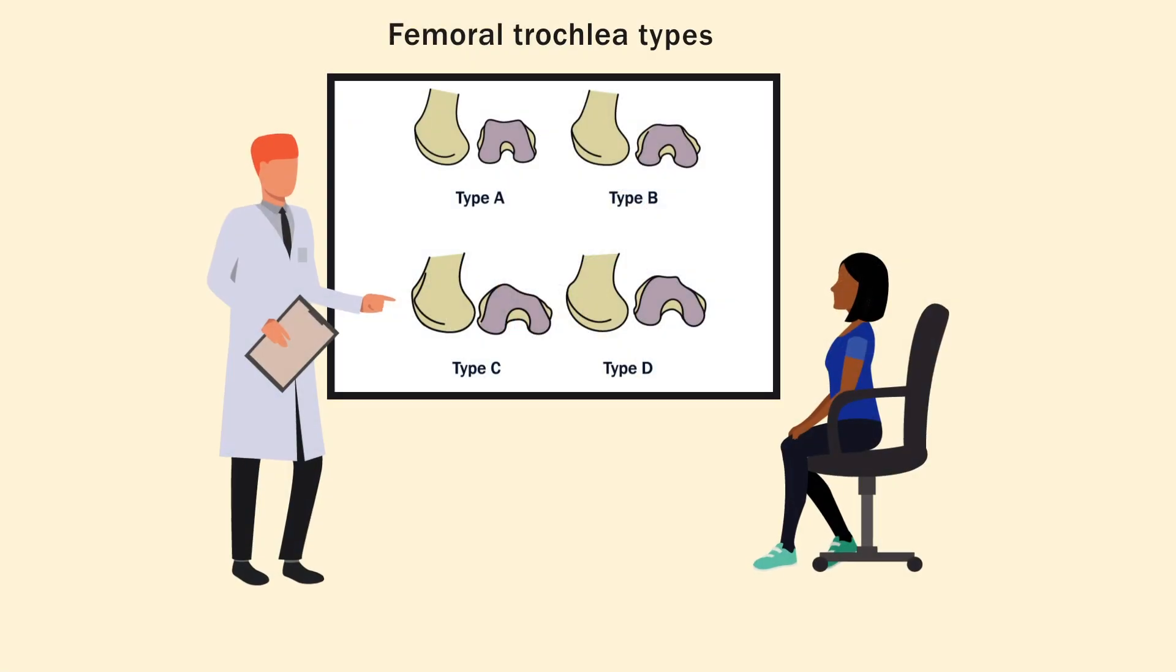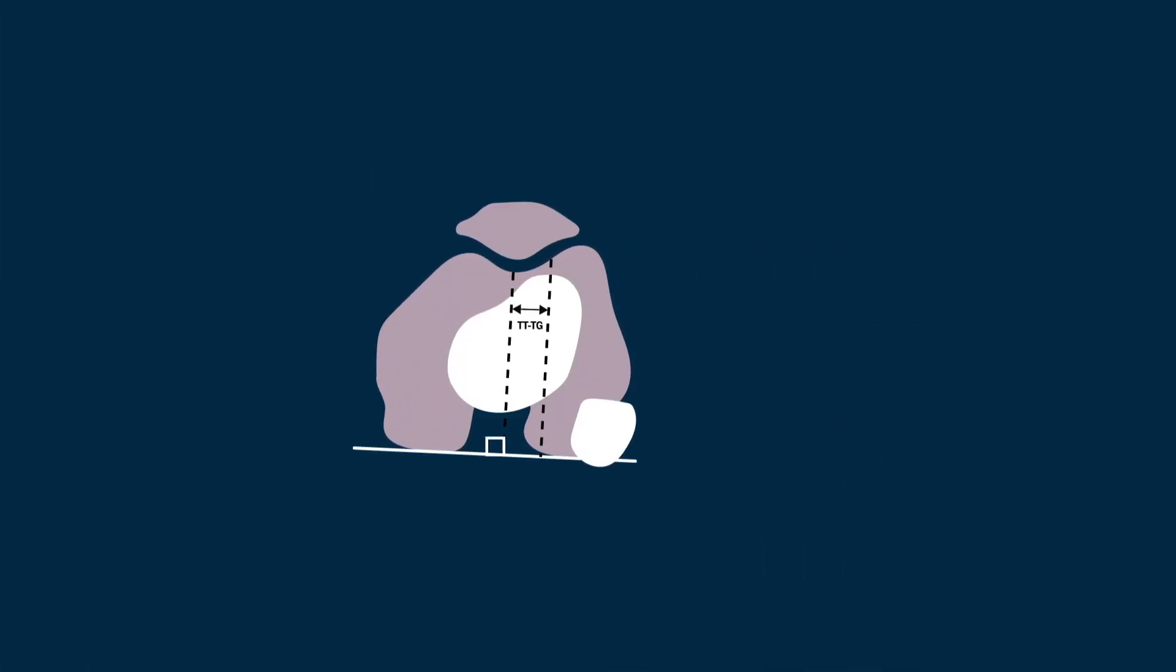Additionally, knees with a type D femoral trochlea had a significantly greater TTTG distance than those with a type A, B, or C femoral trochlea.